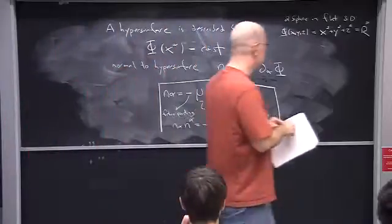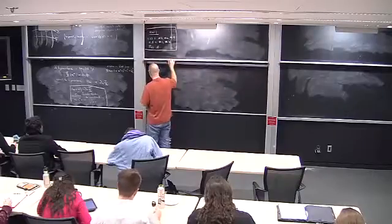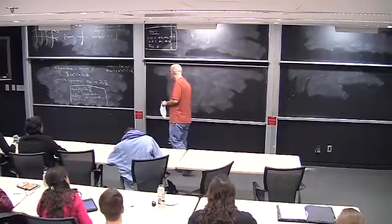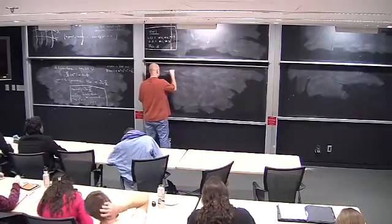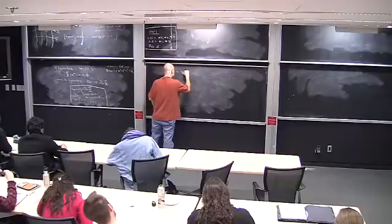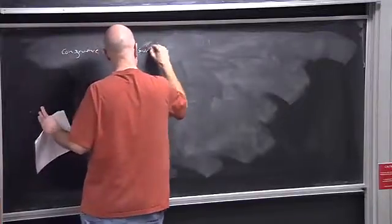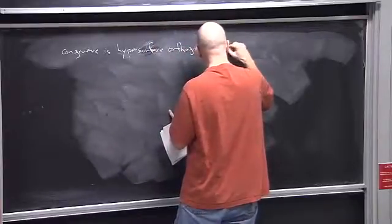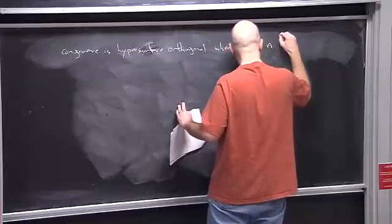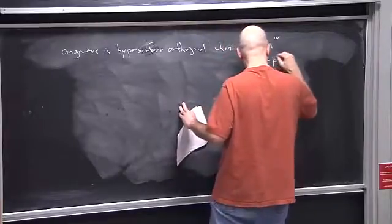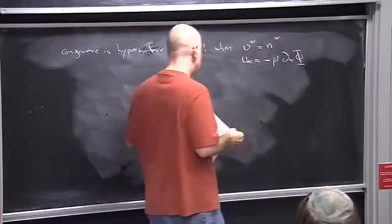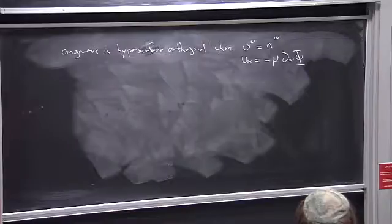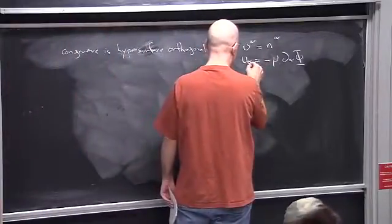So what do we have now? We have our description of the family of hypersurfaces and we have the normal vector. The point is that the congruence is hypersurface orthogonal when u agrees with n, and that means that u_α with the index down is proportional to a gradient. Mathematically, that's what it means for our congruence to be hypersurface orthogonal — we can claim that everywhere along the congruence u is proportional to a gradient.